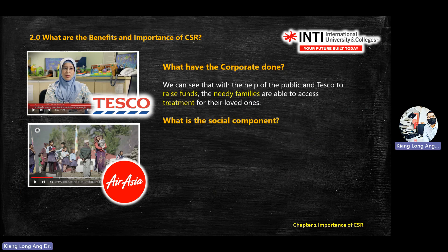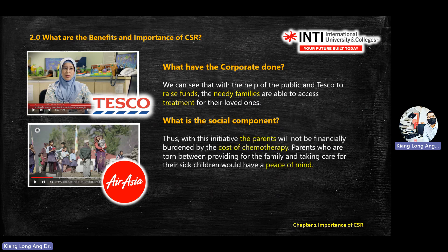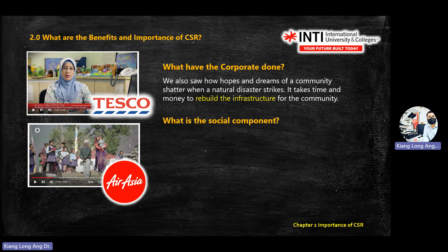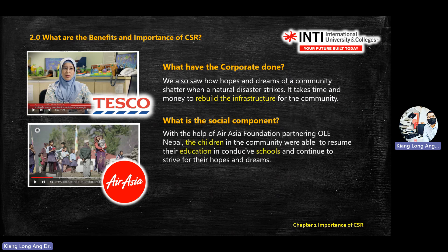We look at two questions: corporate dimension and community dimension. The first video is about Tesco. What they do is raise funds for needy families. Tesco helps needy children who need to pay high hospital bills, especially those needing chemotherapy. The corporation component is Tesco; the community component is the needy family. They supply funding and help with medical needs. The second is Asia — they rebuild infrastructure by building schools for children, so it's under the education dimension.